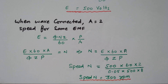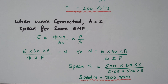In this video, we discussed the EMF induced in the DC generator, part 1, covering two different problems. For the second problem, we first considered the lap winding and calculated the induced EMF of 500 volts. With that induced EMF, we changed to wave winding and calculated the speed of the DC generator as 300 RPM.